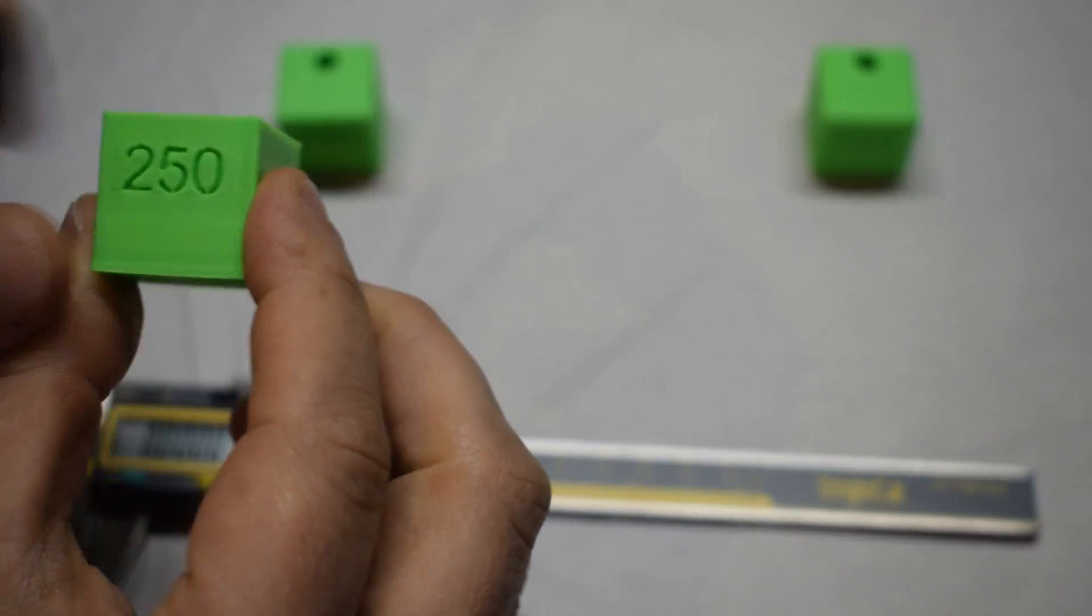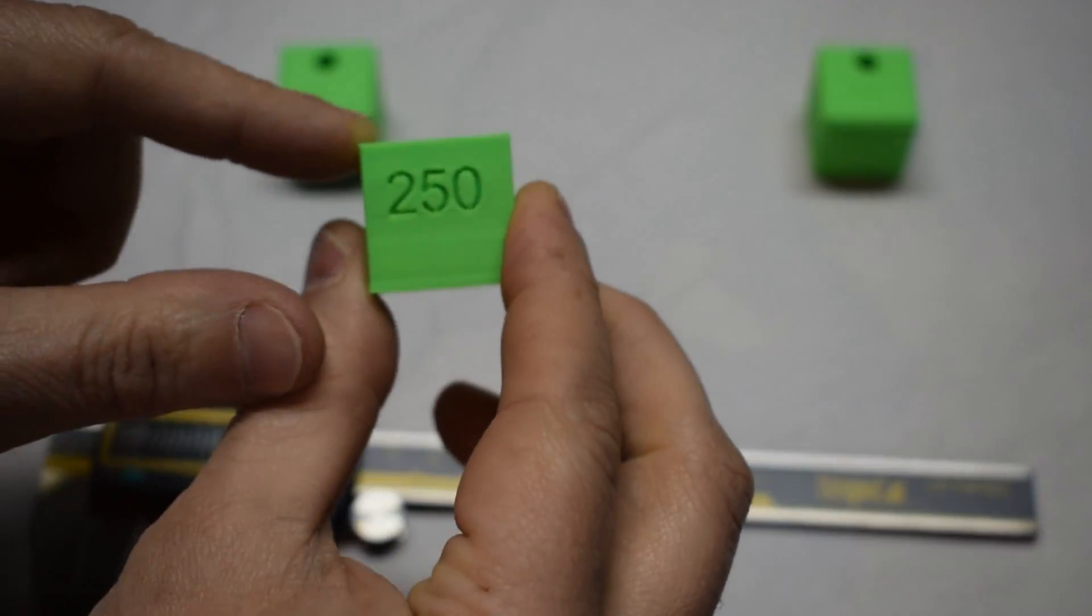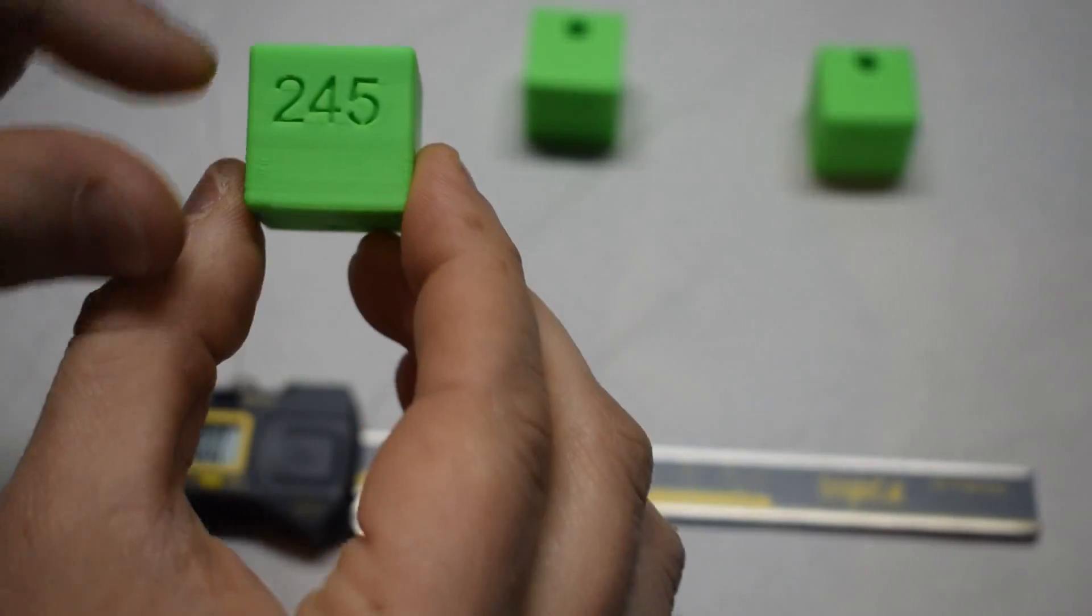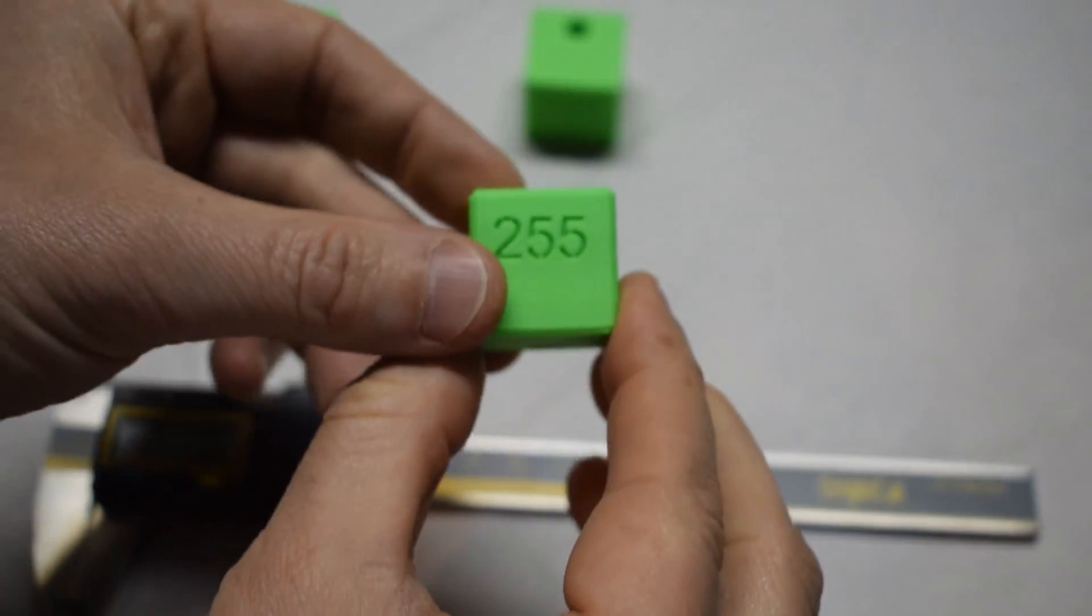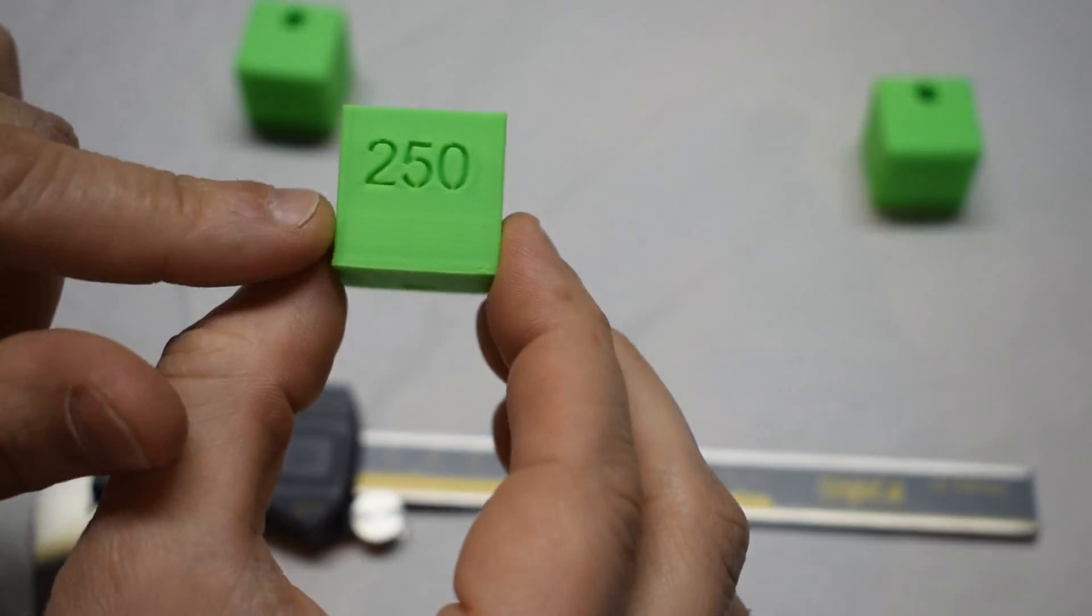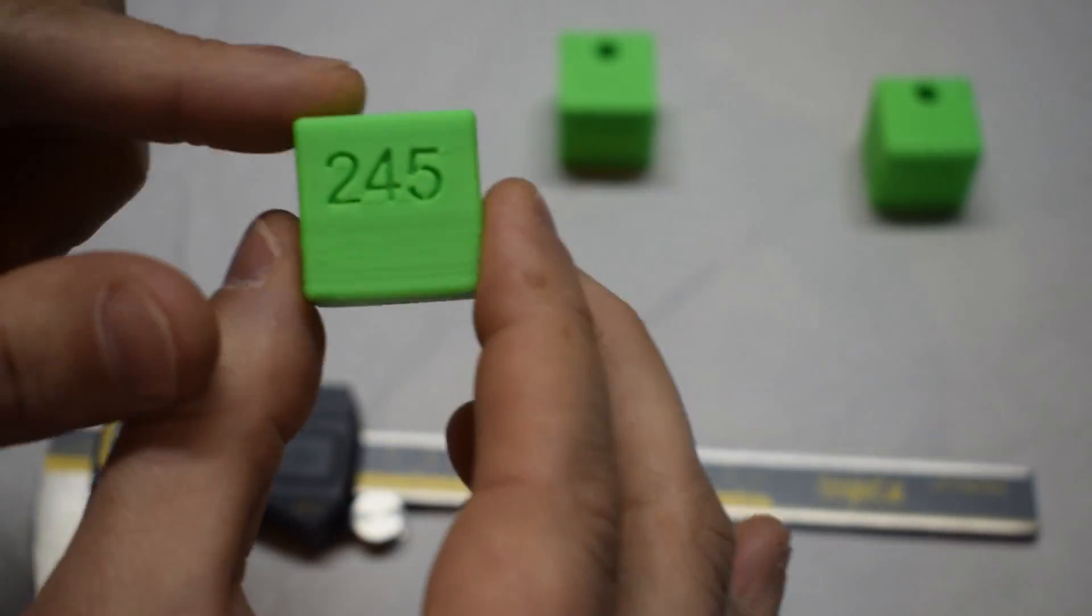I printed three of these: one with a 0.250 hole, one slightly undersized at 0.245, and one slightly oversized at 0.255. The 250 has perfectly square corners in the model, the 245 has a fillet on those corners, and the 255 has a chamfer on those.